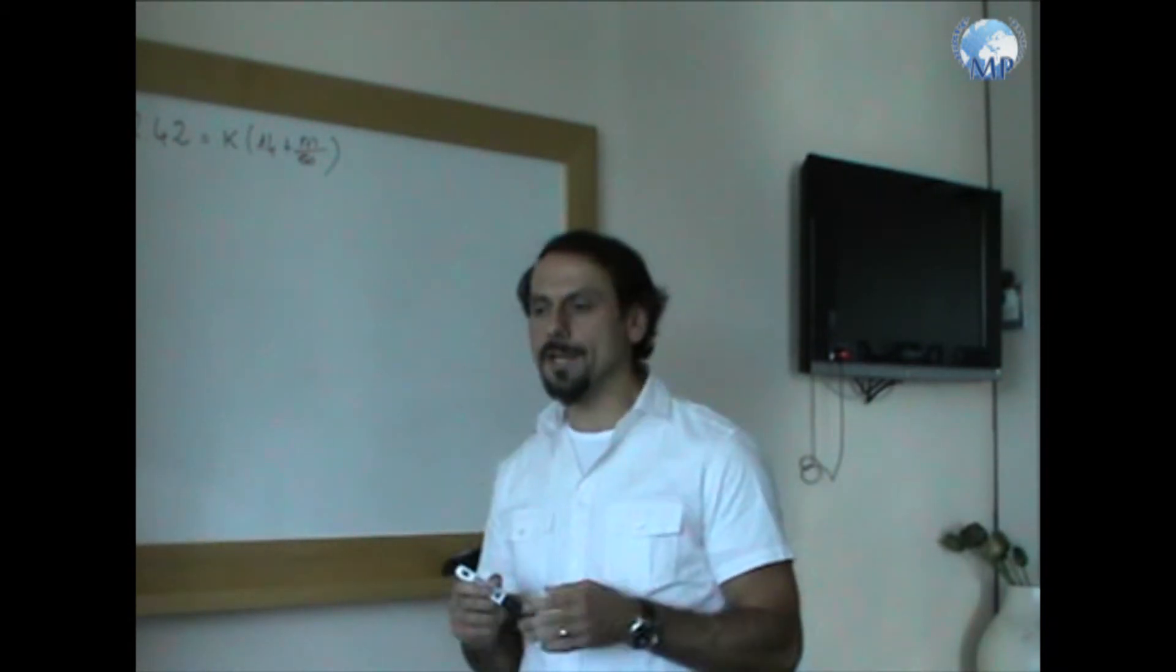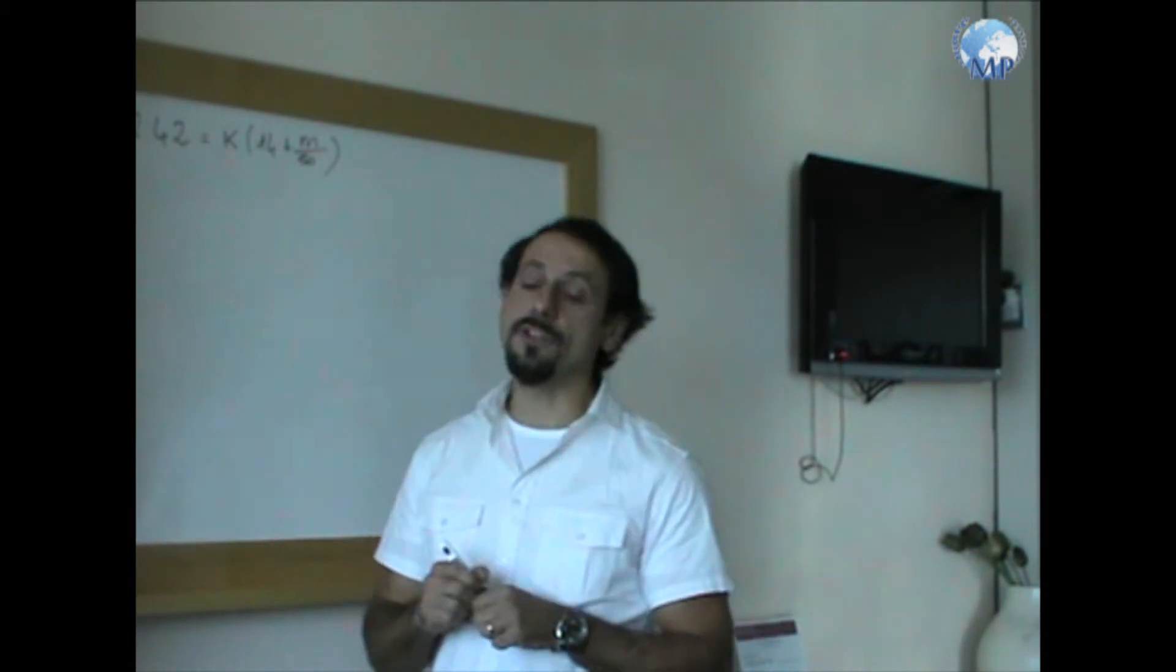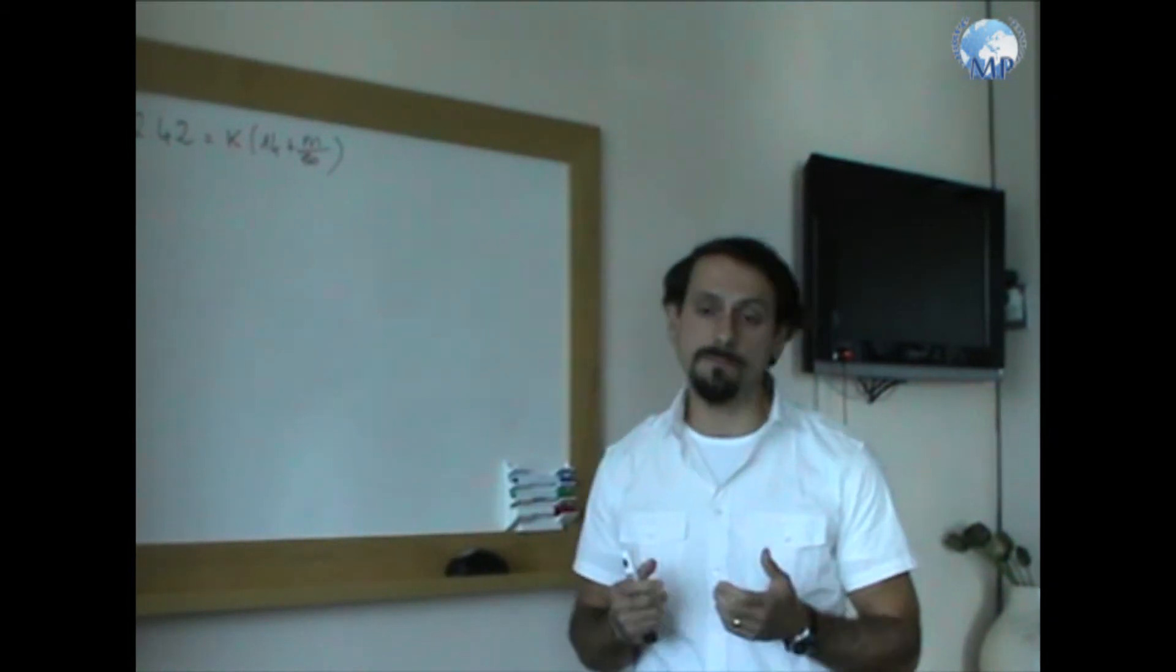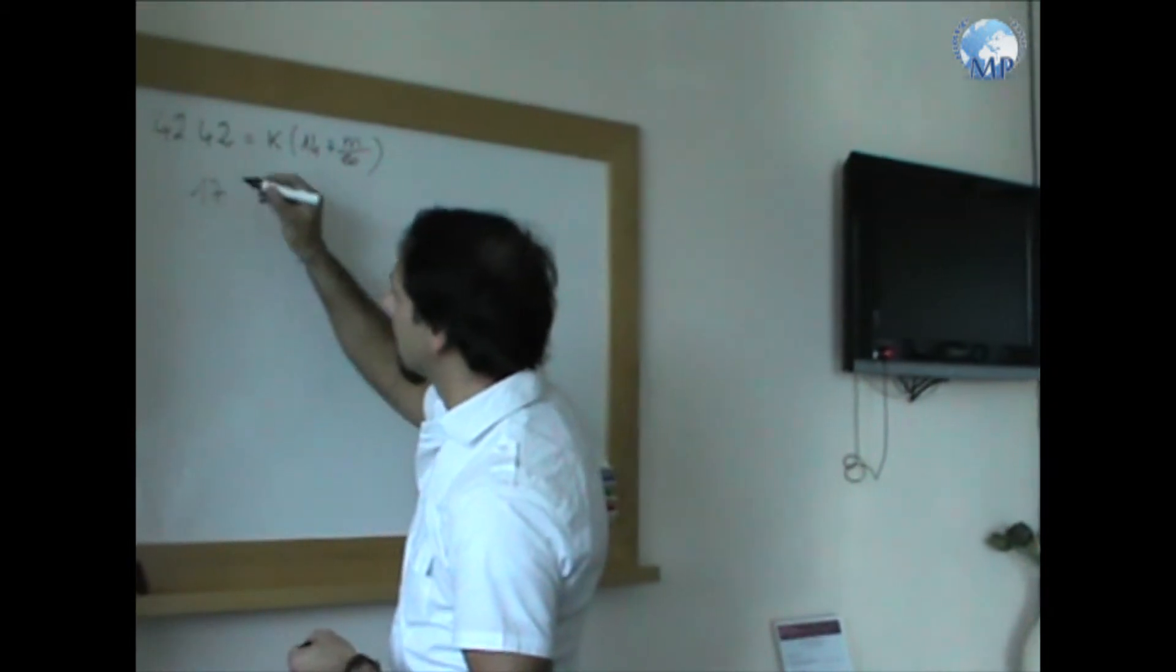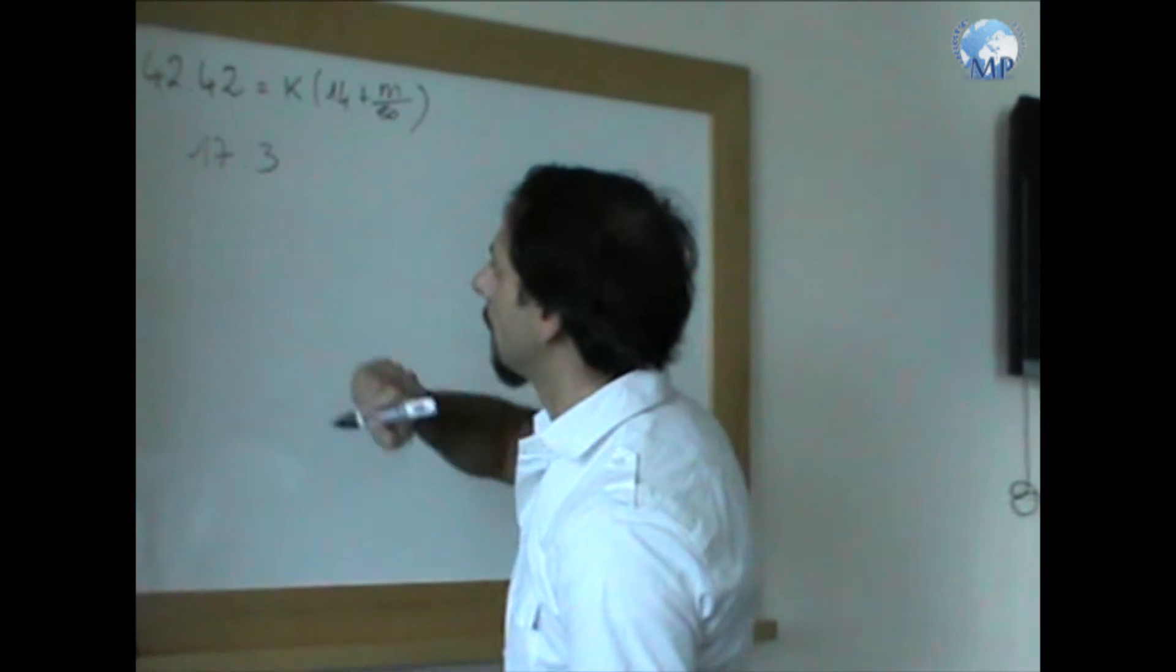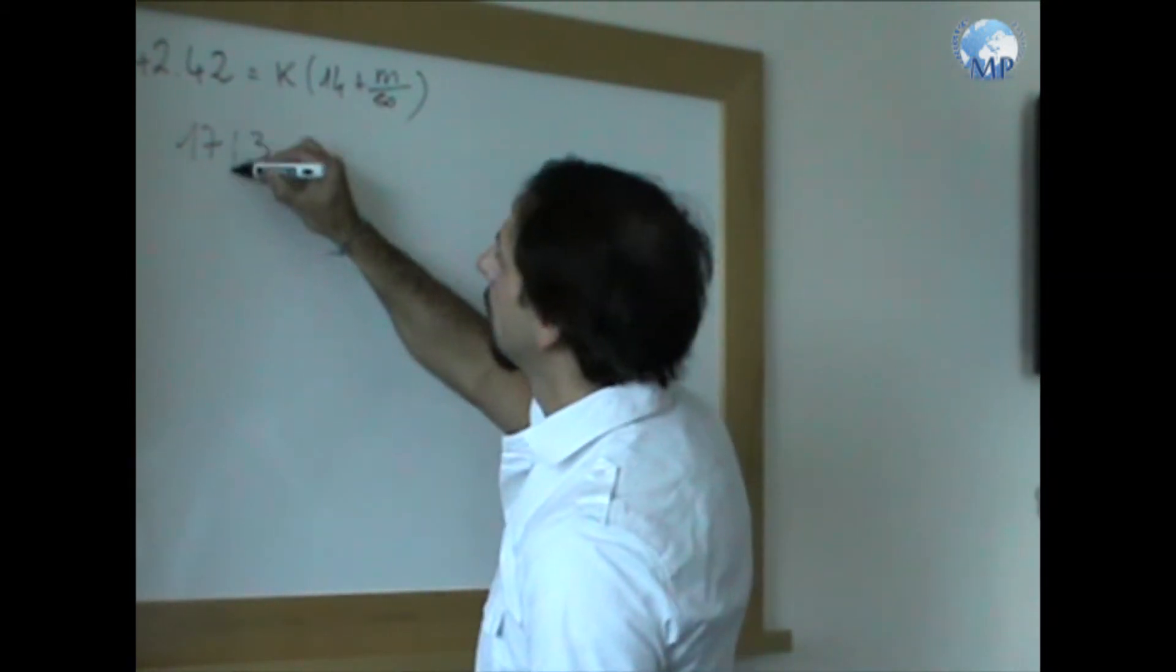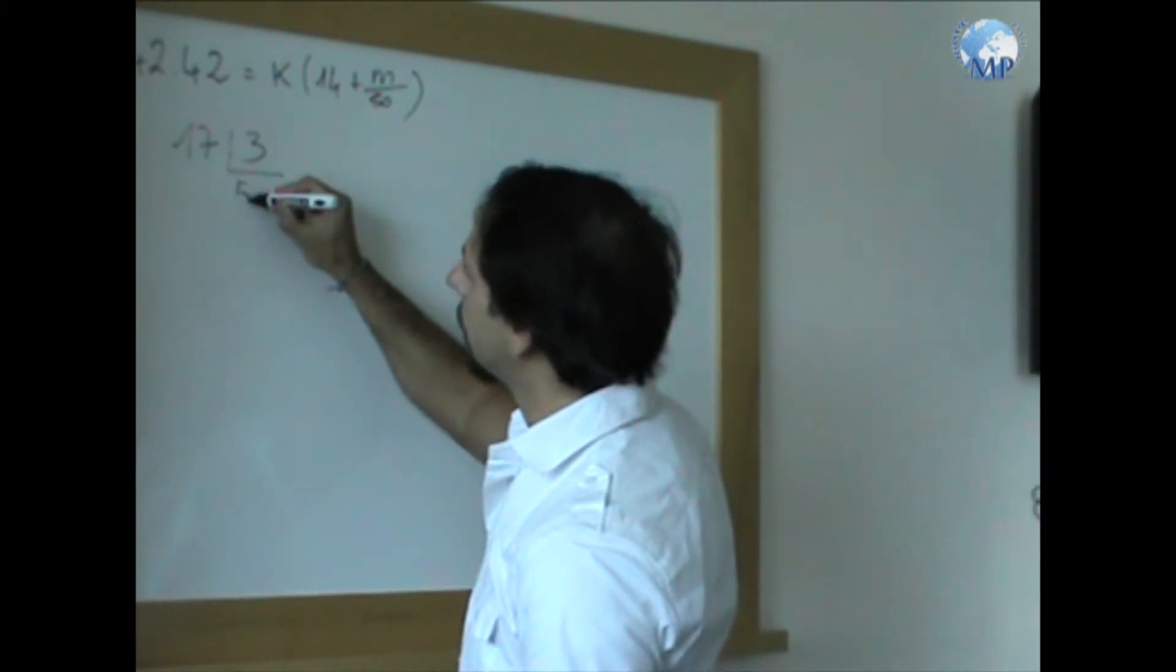If we take a number that, when divided by another number, gives me a remainder, for example, 17. If I divide it by 3, my quotient is 5.